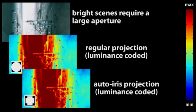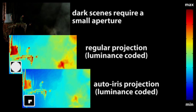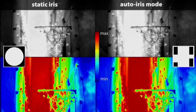Scaling the apertures additionally based on the average luminance of the input images increases temporal contrast as it is the case for auto-iris projector lenses. These examples show color-coded local luminance of images projected in our coded auto-iris mode. The aperture scale is adapted to the brightness of every individual frame.